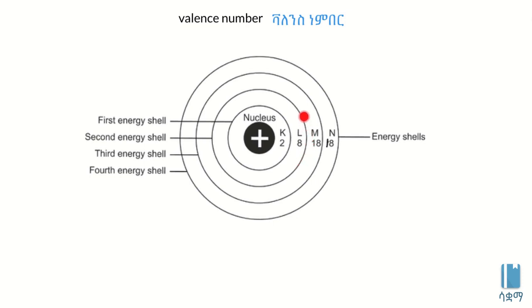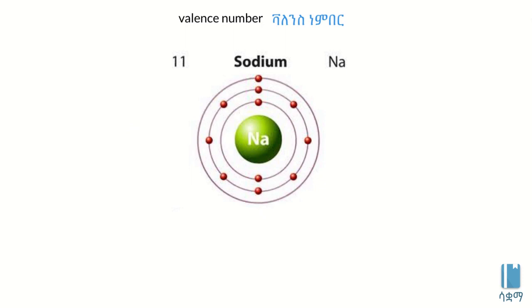For example, an element with two shells: the first shell has two electrons, the second shell has eight electrons. In the case of sodium, it has eleven electrons. The first shell has two, the second has eight, and the third has one.